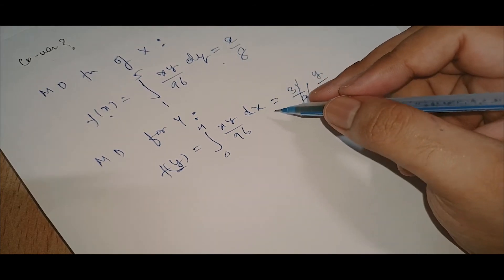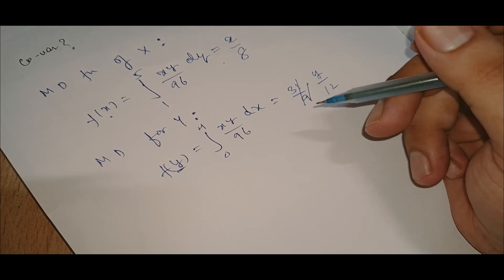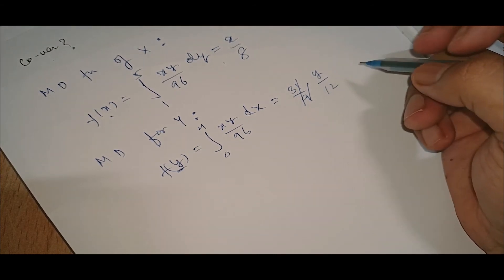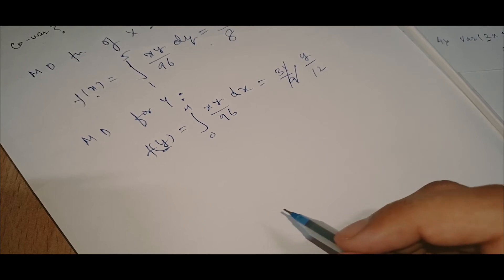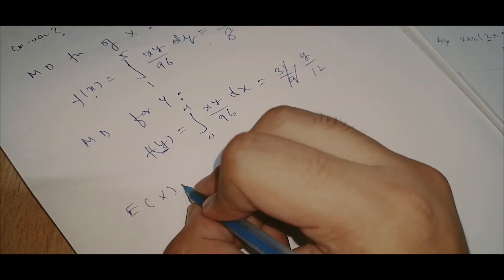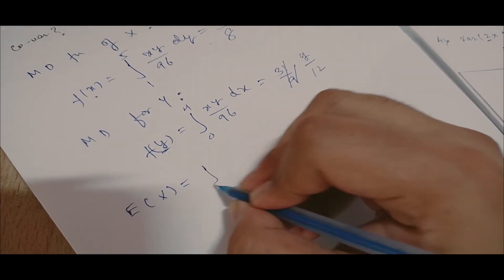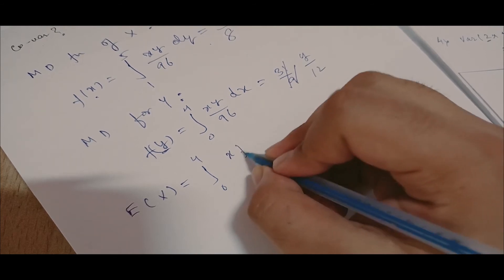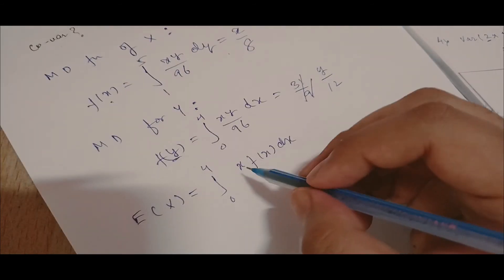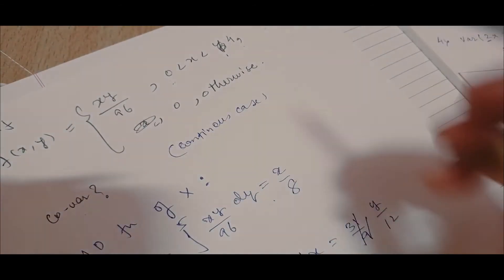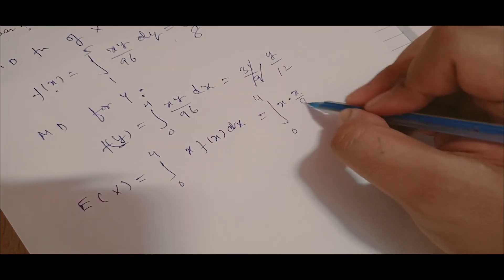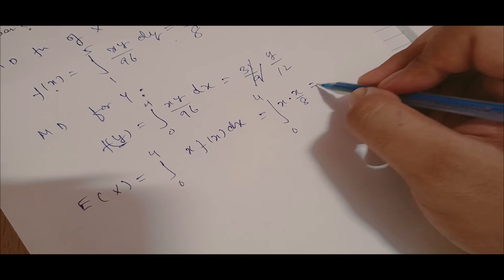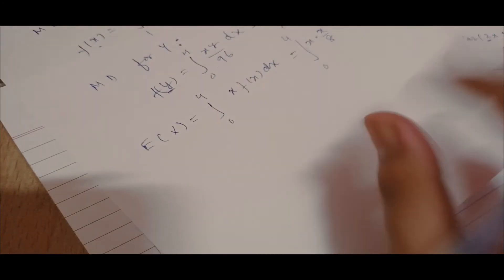For covariance, we need E(X) and E(Y). E(X) = integral from 0 to 4 of x·f(x) dx = integral from 0 to 4 of x·(x/8) dx. After solving, E(X) = 8/3.